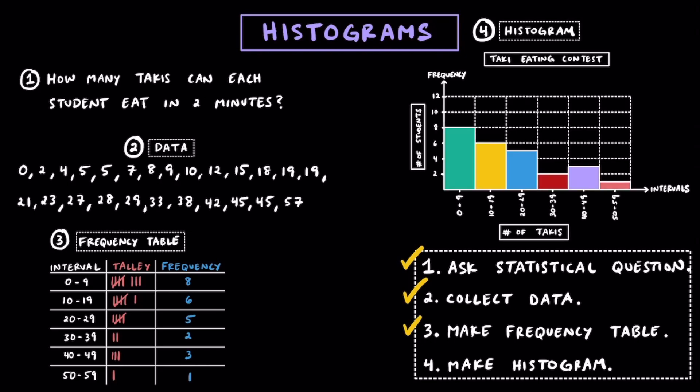Using our frequency table, we always put the intervals along the x-axis, and the frequency along the y-axis. These are the four steps we want to follow to create a histogram.